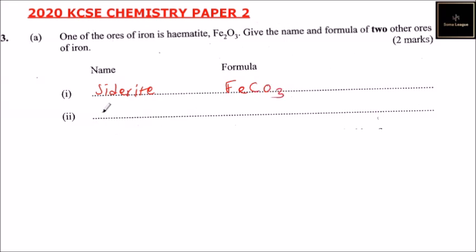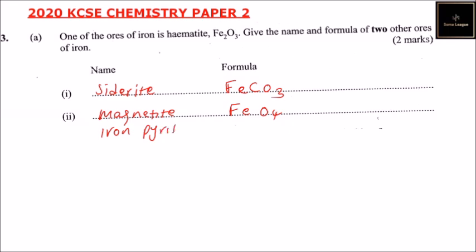The other one we can talk of is Magnetite, and the formula is Fe3O4. We also have another one — Iron Pyrite, and the formula is FeS2.